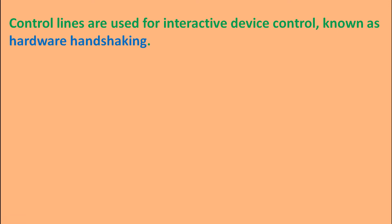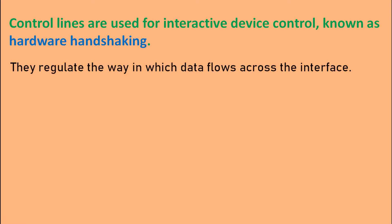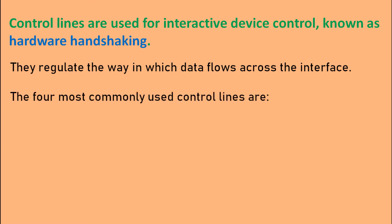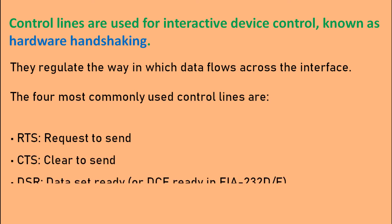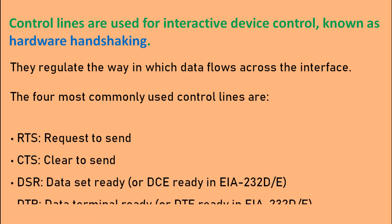Control lines are used for interactive device control, commonly known as hardware handshaking. They regulate the way in which data flows across the interface. The four most commonly used control lines are RTS (Request to Send), CTS (Clear to Send), DSR (Data Set Ready), and DTR (Data Terminal Ready).